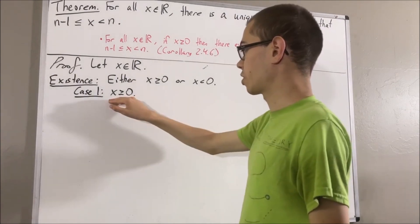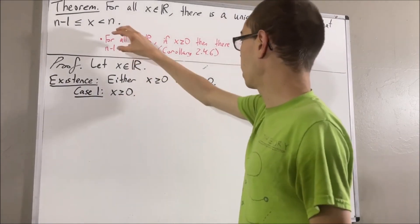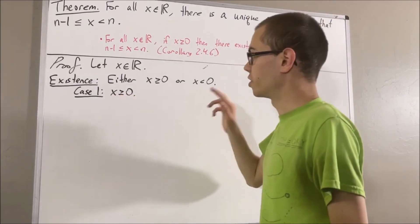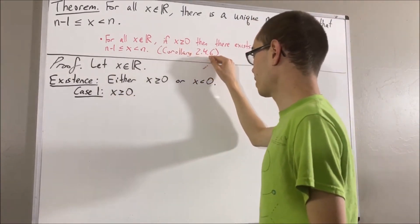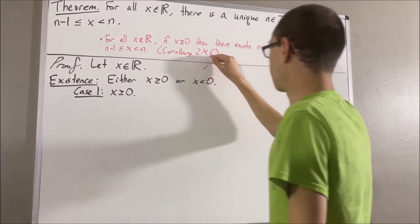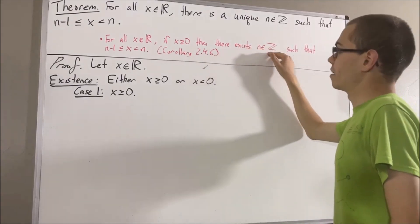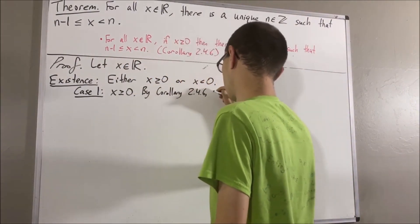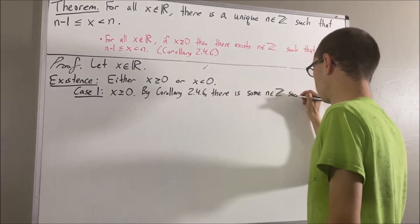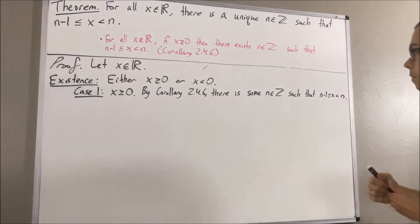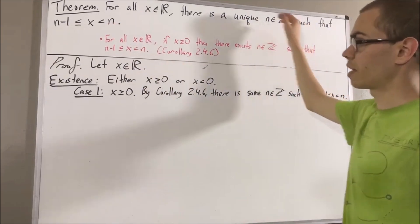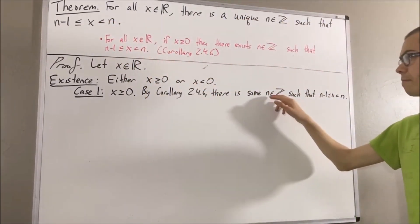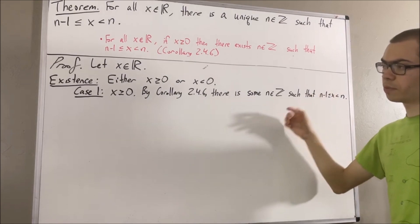Let's start with case one, where x is greater than or equal to 0. In this case, we can apply Corollary 2.4.6 to x. Applying Corollary 2.4.6, we have that there is an integer n that satisfies this inequality. So we have found an integer that satisfies this inequality, namely n. This completes case one.